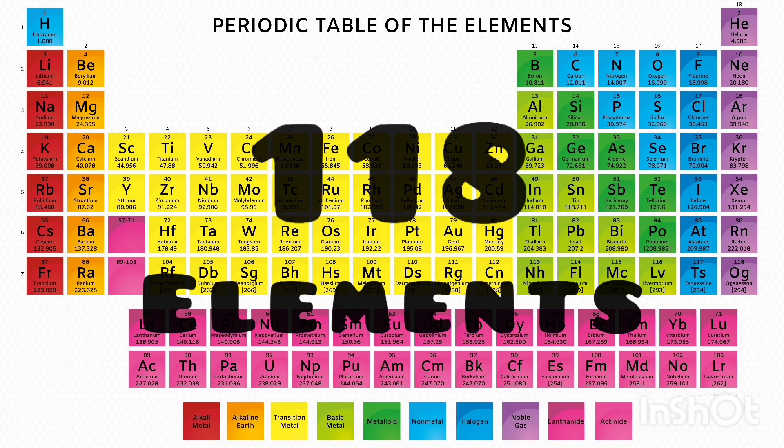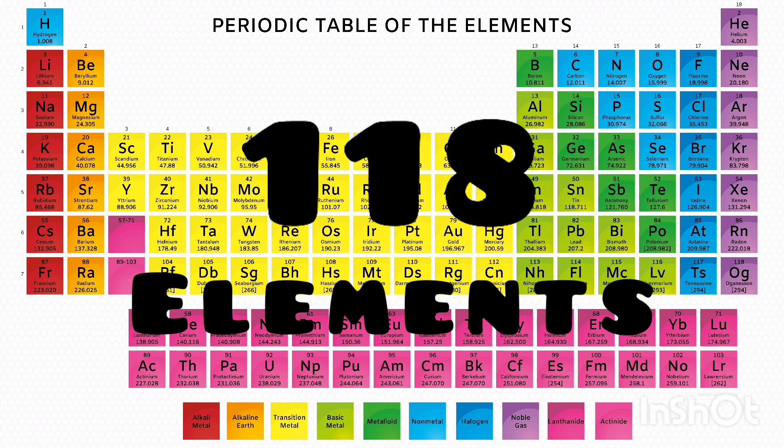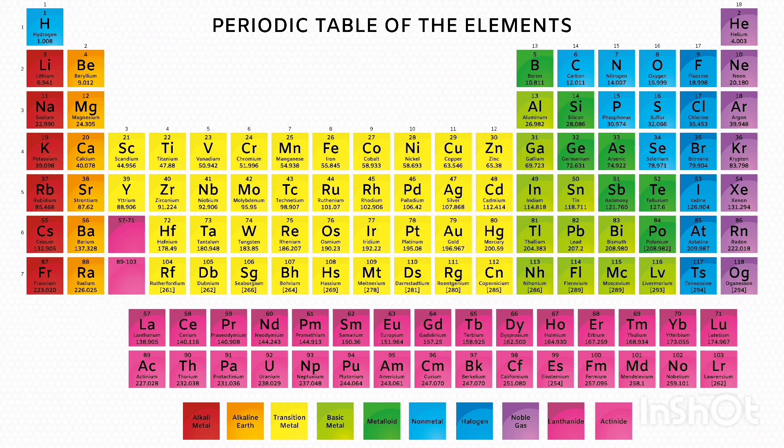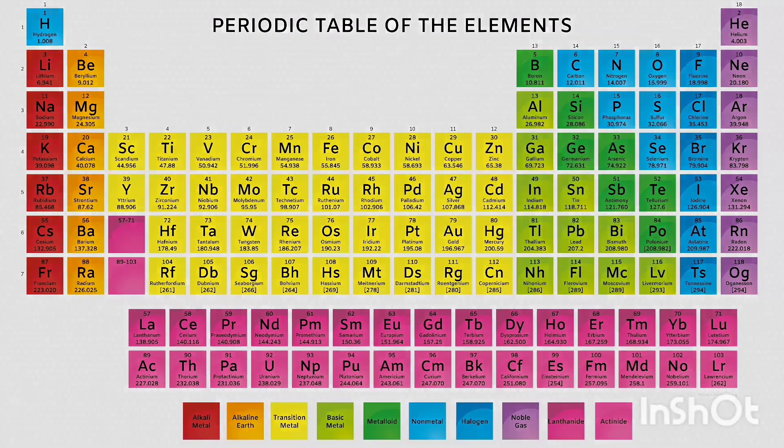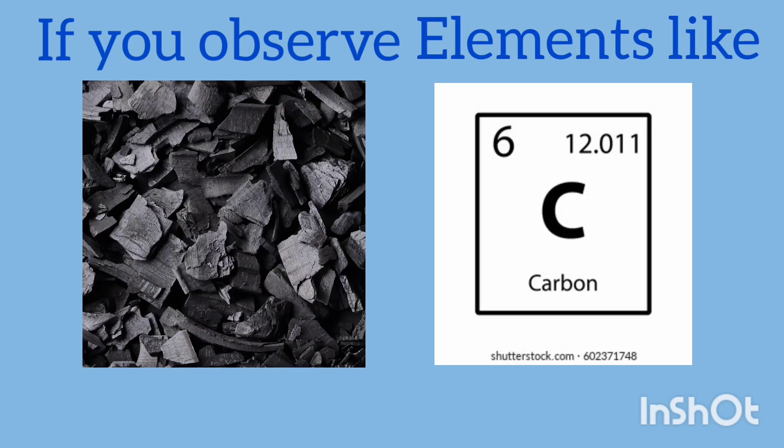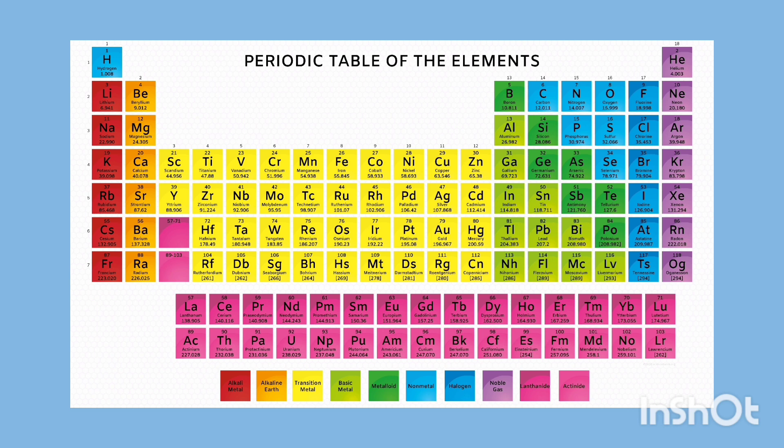There are 118 different kinds of atoms, each the smallest part of an element. If we observe elements like gold, carbon, and oxygen in the modern periodic table,